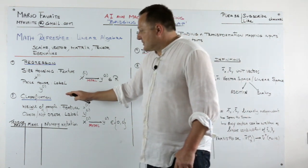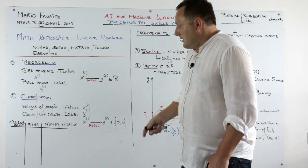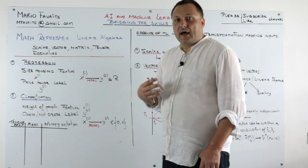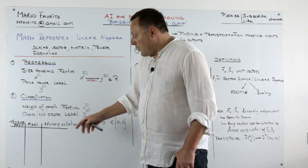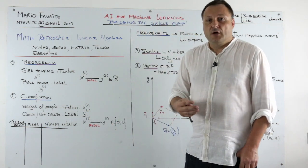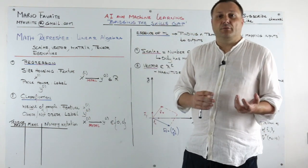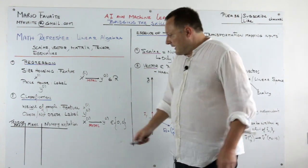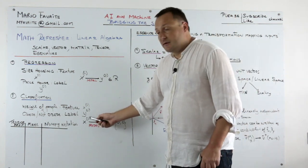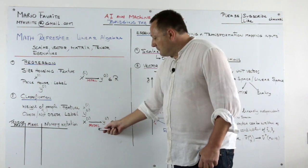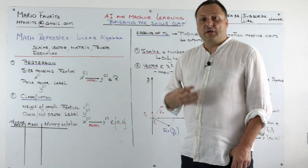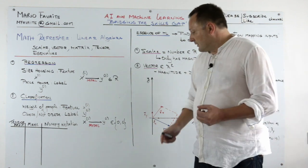Now the classification is exactly the same. The feature here, the XI, were the weights of people. Whereas the Y label here was either the person is obese or the person is not obese. So here again we have an input XI, in this case a weight in kilograms. And you find a model so that you can find that the person is obese or not obese.